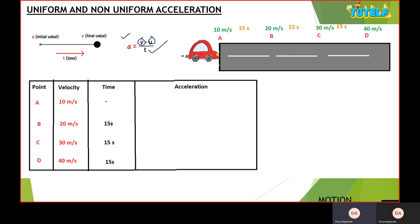So here this car is moving on a straight road, and at each interval of 15 seconds the velocity of the car is changing. At point A the velocity is 10, at B it is 20, at C it is 30, at D it is 40 meters per second. I have made a table noting down the velocity and the time interval.